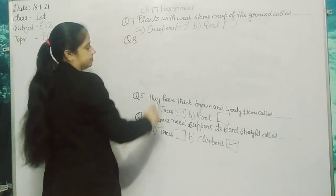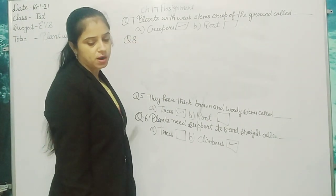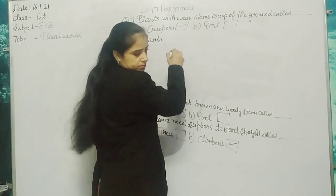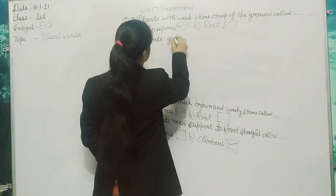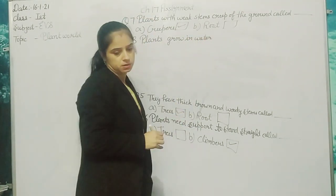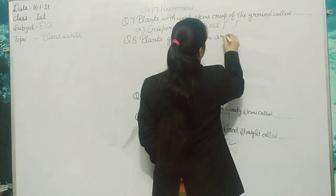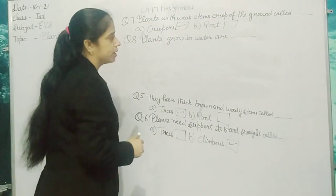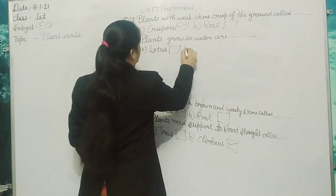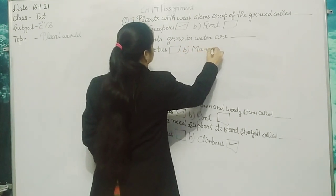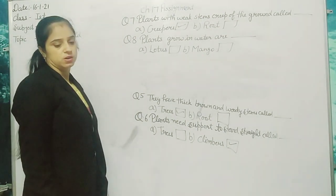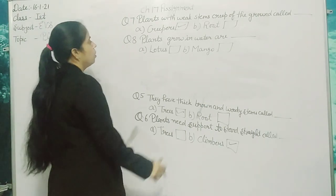Question 8: Plants that grow in water are dash — Option A: lotus, Option B: mango. Plants grow in water — which one? Lotus. Mark it on lotus.